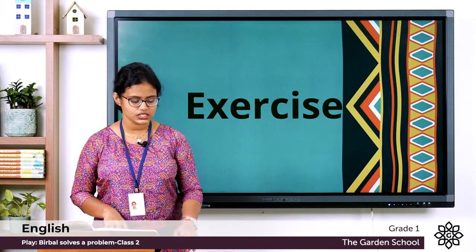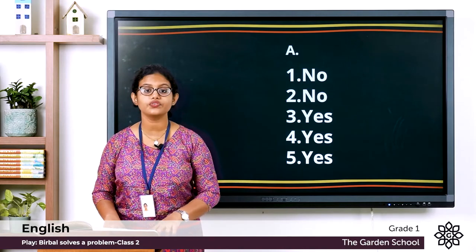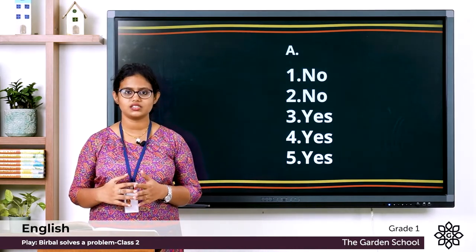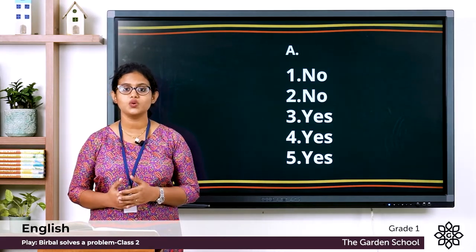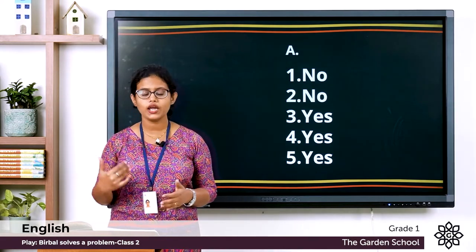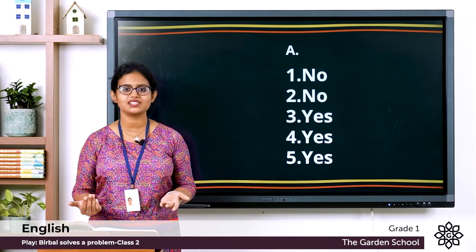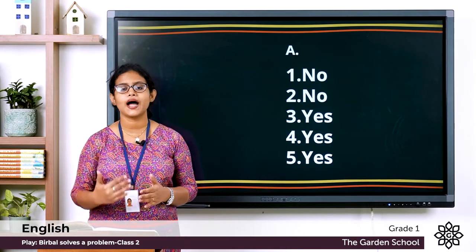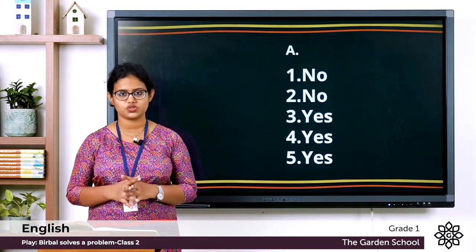So let's see the answers. What is the answer for the first one? Mohan and Sohen were good friends — they were not good friends, they were fighting. So the answer is no. Second one: Mohan and Sohen were fighting over a mango. The answer is no. They were fighting over a mango tree, not a mango.